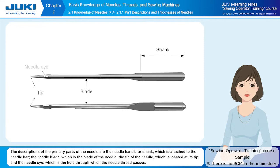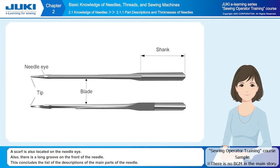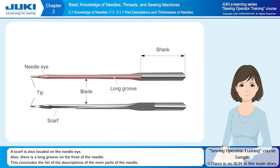hole through which the needle thread passes. A scarf is also located on the needle eye. Also, there is a long groove on the front of the needle. This concludes the list of the descriptions of the main parts of the needle.